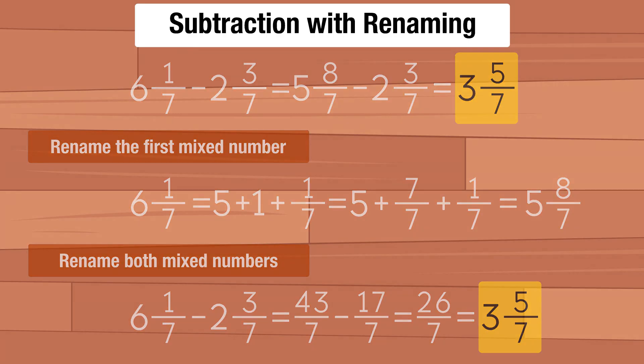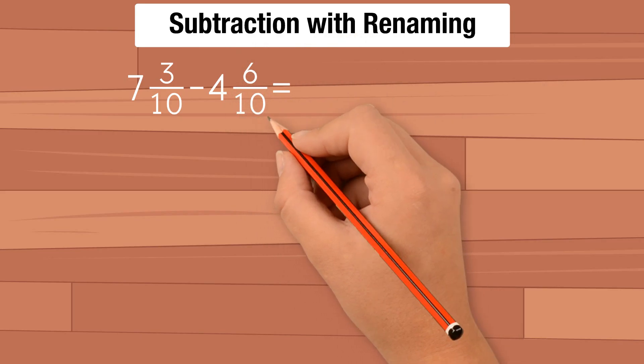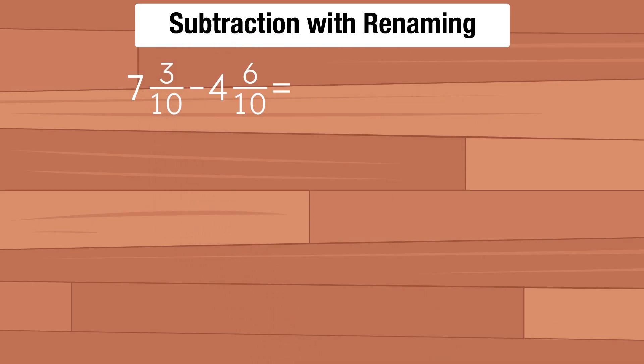Let's do another example: 7 and 3 tenths minus 4 and 6 tenths. First we subtract the fractional parts, but we can't subtract 6 tenths from 3 tenths because 6 is greater than 3. We have to use renaming in order to subtract.